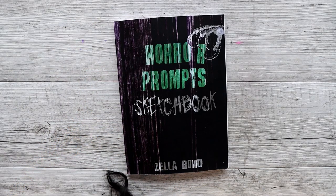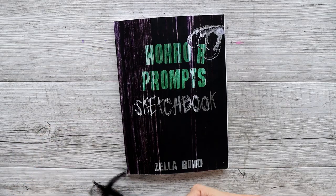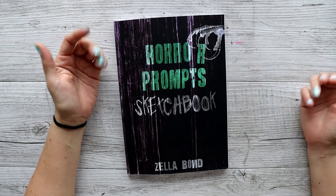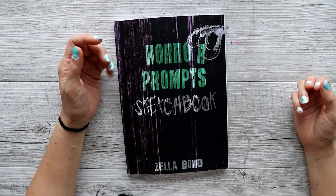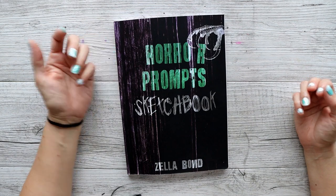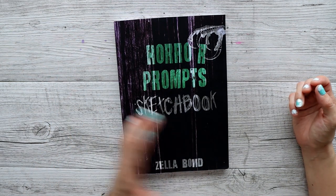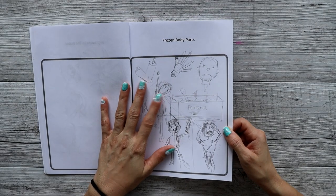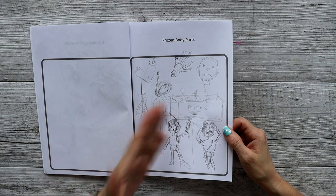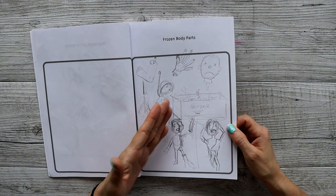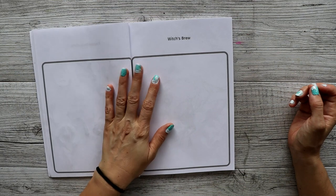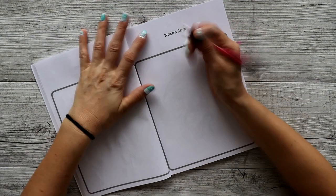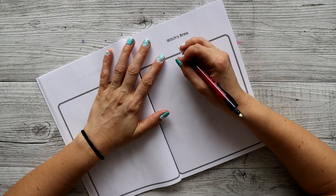It is a wonderful rainy day outside. You know what better time than to do a horror prompt in this gloomy dark day. All right, well let's find out what the next prompt is. As I like to recap, last one was frozen body parts. The next one is witch's brew.